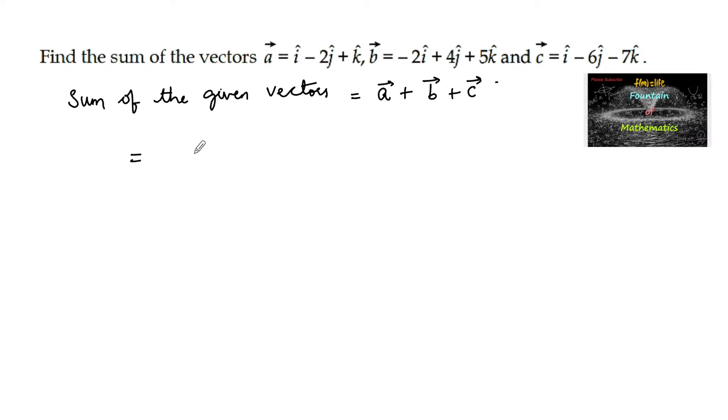Which is equal to i minus 2j plus k plus minus 2i plus 4j plus 5k plus i minus 6j minus 7k.